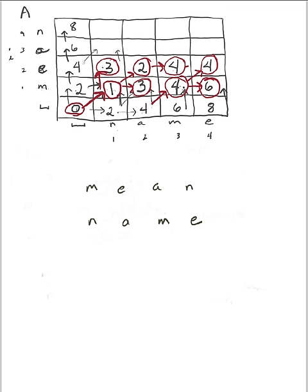Or I can go from here, advancing both on the mean and the name string — that's matching N to N, a cost of 3. So 3 plus 4 is 7. Or I can insert a gap: 6 plus 2 is 8. The minimum cost of those three is 5, and I got there from 3 plus 2.